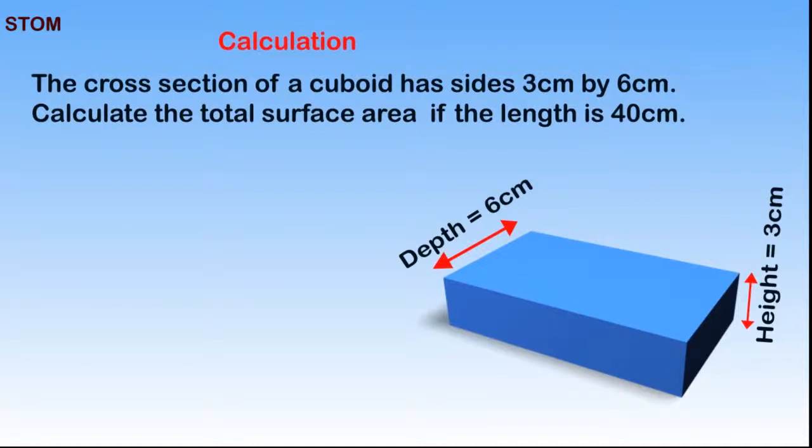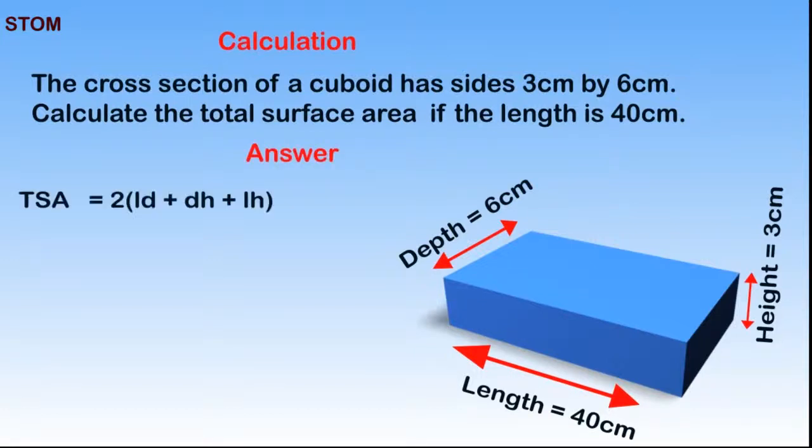We are given the depth to be 6cm and the height to be 3cm. Let us recall that the formula for calculating surface area is 2 into brackets: LD plus DH plus LH.